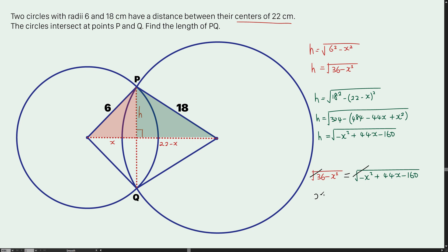And for the value of x, eventually, it is equal to 49 over 11.